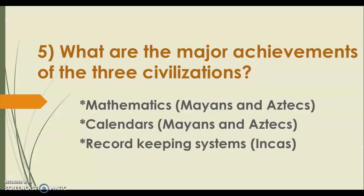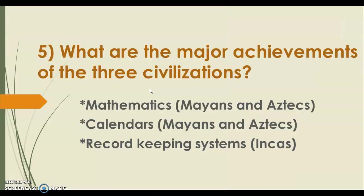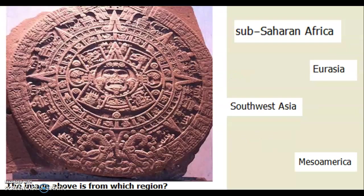The major achievements of the three civilizations include: mathematics for the Mayans and Aztecs, calendars for the Mayans and Aztecs, and record-keeping systems for the Incas. If the SOL shows you a calendar image and asks which region it's from, the answer is Mesoamerica, because the Mayans and Aztecs made calendars and they lived in Central America — the land between two Americas.